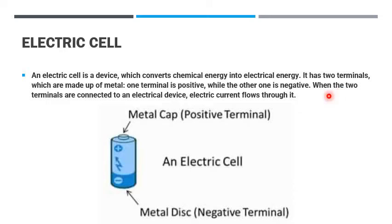When the two terminals are connected to an electric device, electric current flows through it. As you are seeing in this picture, this is the metal cap and at the end of the cell, this is the metal disc. It is the negative terminal and the metal cap is the positive terminal.